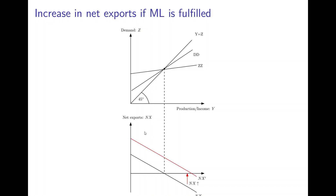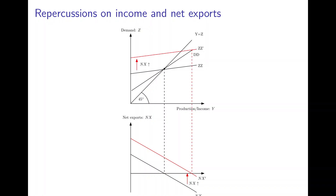Now a depreciation happens and the Marshall-Lerner condition is fulfilled, so we know that net exports will increase. What is the effect of this on total demand? It will rise from ZZ to ZZ', and it will intersect the DD curve at a point where again trade is balanced — no trade surplus or trade deficit. But this is not the new equilibrium. The new equilibrium is where the new ZZ' curve intersects with the 45-degree line.